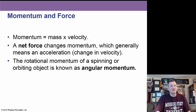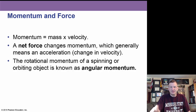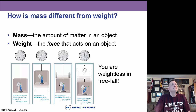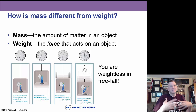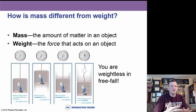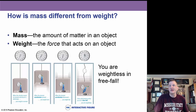Momentum is the mass of the object times its velocity. If the object is moving in a rotational manner around a circle, we call that angular momentum. Mass is just the amount of stuff that object has in it, while weight takes into account the force of gravity acting on that object. So it is possible to be in a free fall — for example, in an elevator if it were to disconnect from its cable.